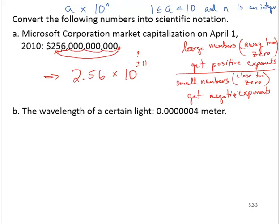I should have prefaced that by saying at least when we're talking about scientific notation. So then we'd have 2.56 times 10 to the positive 11th. Because 256 billion is a large number. It's far away from 0.